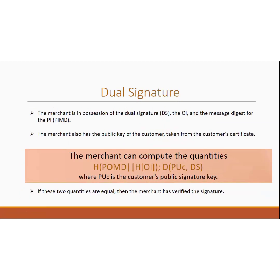The next part is the merchant side. The merchant has the public key of the customer, obtained from the customer certificate. What the merchant does is compute a verification quantity using the public key of the customer for decryption — PK_C is the public key of customer. If the two computed quantities are equal, then the merchant has verified the signature. H(OI) is the hash of order information, and PIMD is the payment information message digest.